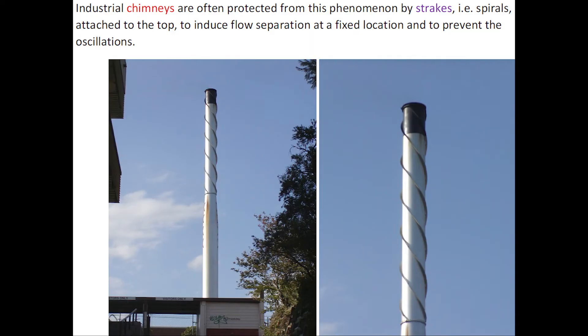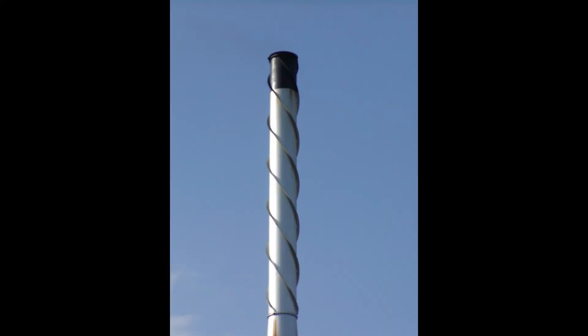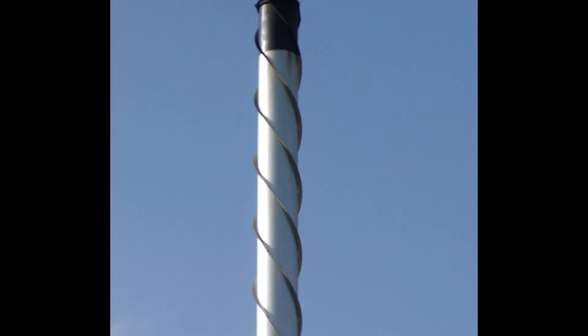Industrial chimneys are often protected from this phenomenon by strakes, that is spirals, attached at the top to induce flow separation at a fixed location and to prevent the oscillations, as illustrated in this photograph.